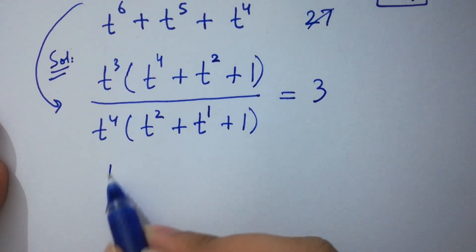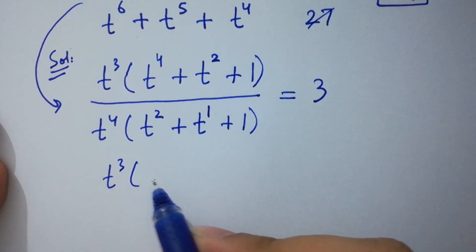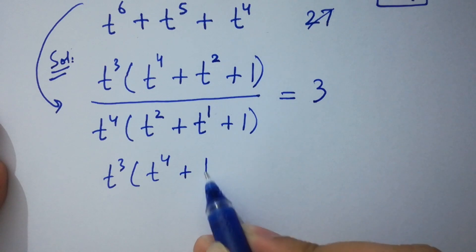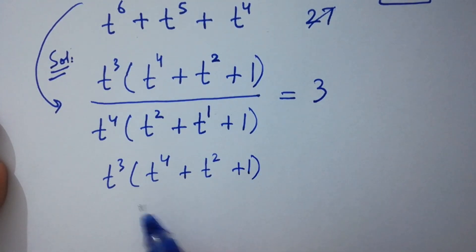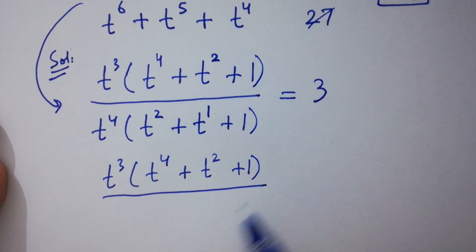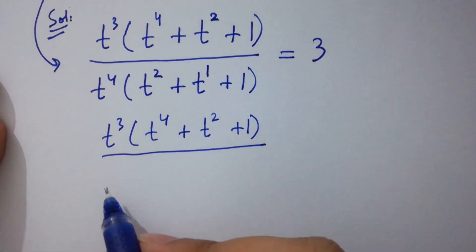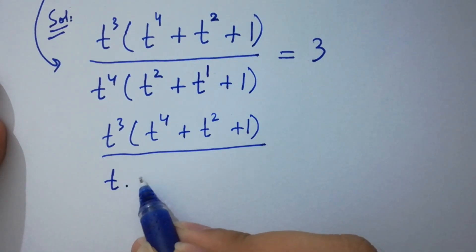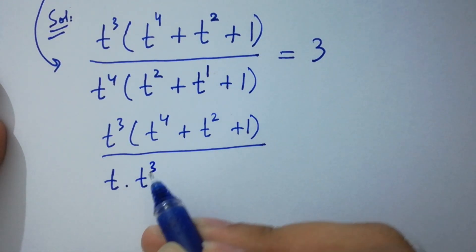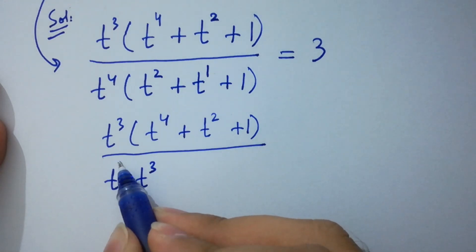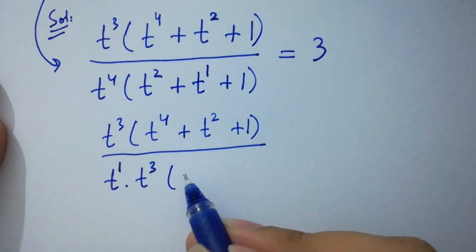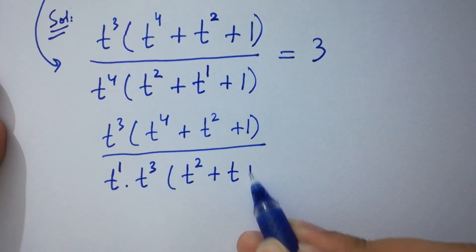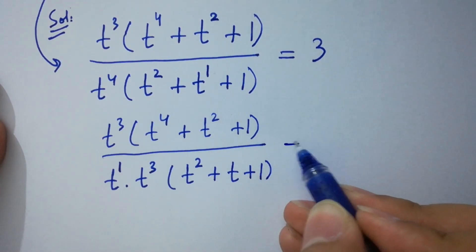Simplify this: t cubed times bracket t to the power 4 plus t squared plus 1, over t to the power 4. Now t to the power 4 can be written as t times t cubed — because 3 plus 1 is 4 — times t squared plus t plus 1, equals 3.